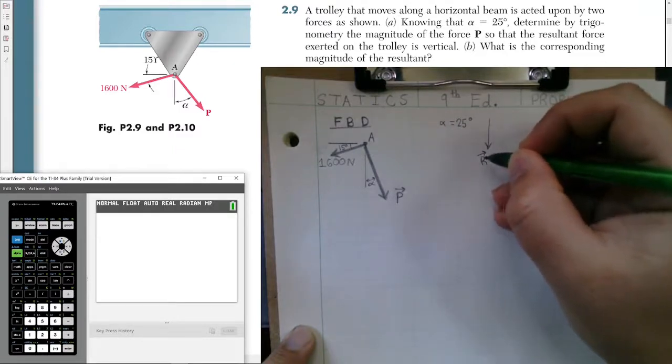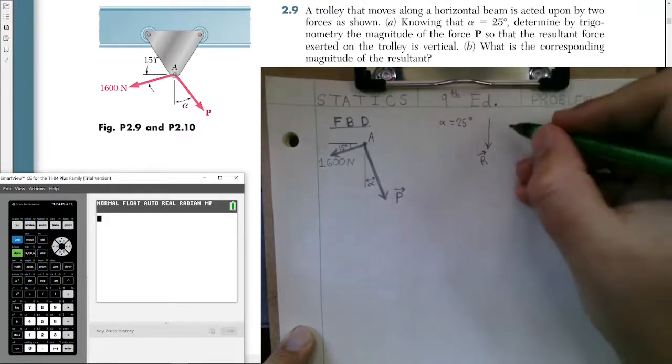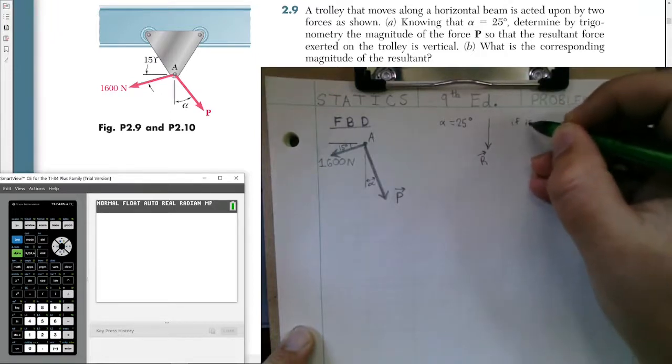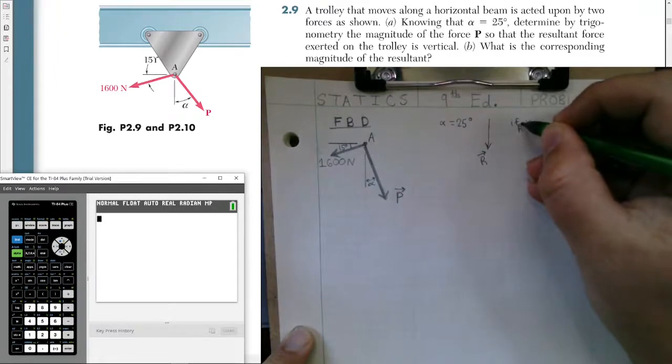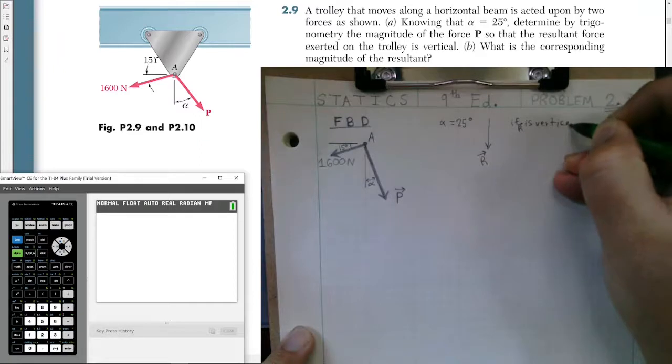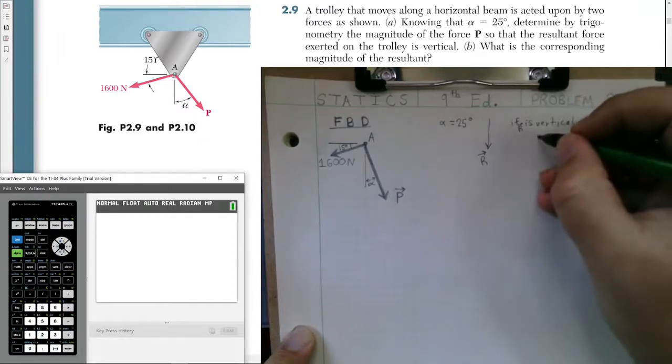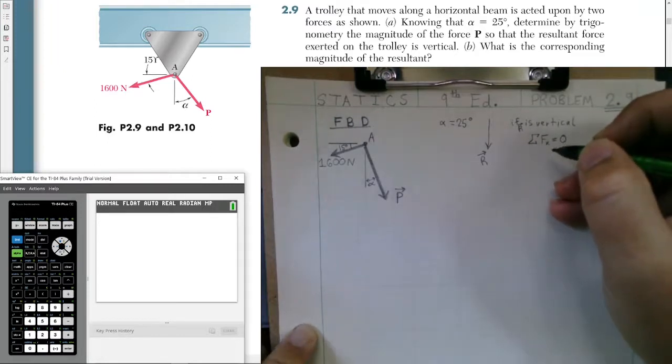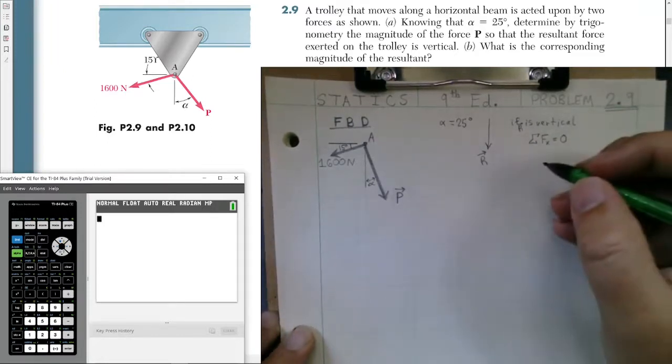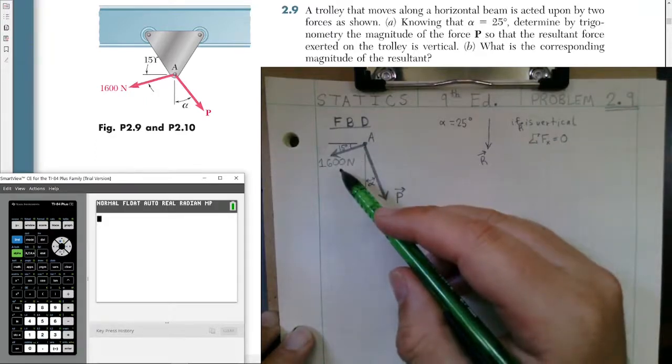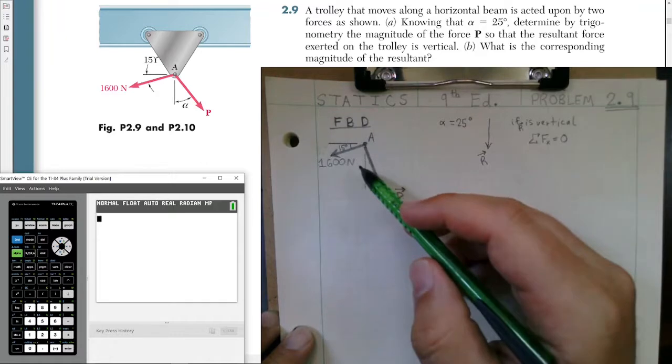We're acting vertical. What that tells us is that if the resultant R is vertical, then the sum of our forces in the x direction will have to be zero. So we're going to sum our forces in the x direction. But before we can do that, we need to break our P vector and our 1600 newtons vector into components in the horizontal as well as the vertical to solve part B.